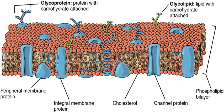Red blood cells, or erythrocytes, have a unique lipid composition. The bilayer of red blood cells is composed of cholesterol and phospholipids in equal proportions by weight. The erythrocyte membrane plays a crucial role in blood clotting. In the bilayer of red blood cells is phosphatidylserine, which is usually on the cytoplasmic side of the membrane. However, it is flipped to the outer membrane to be used during blood clotting.